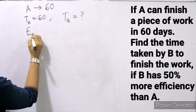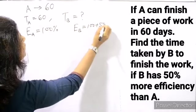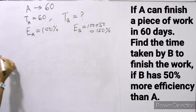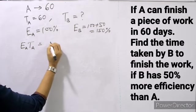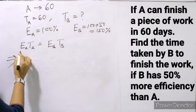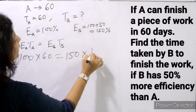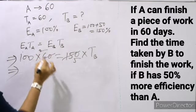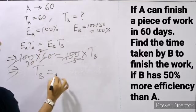Let A's efficiency be 100%. B's efficiency is 50% more, so B's efficiency is 150%. Using the formula eA × tA = eB × tB: 100 × 60 = 150 × tB. Solving, tB = 40 days. So the time taken by B is 40 days.